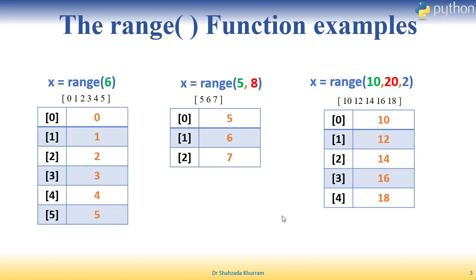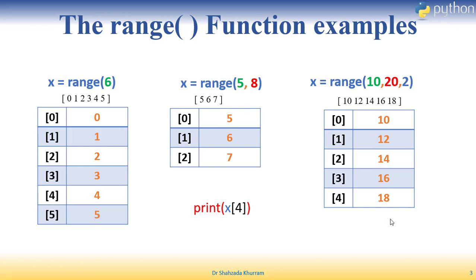If I have values stored in x and I try to print x directly, I cannot print the individual values that way — I have to print them one by one. If I specifically want to print them one at a time, I have to access them by index. This is why we use for loops, which we will see in upcoming videos.